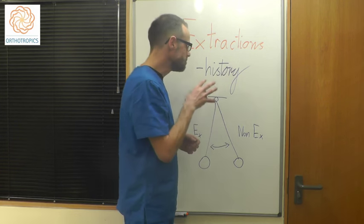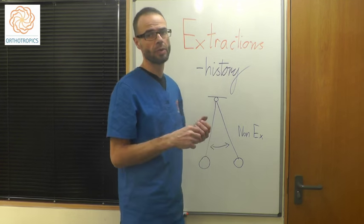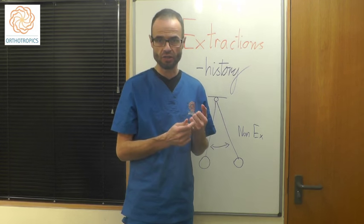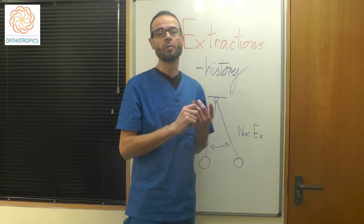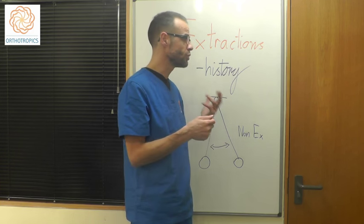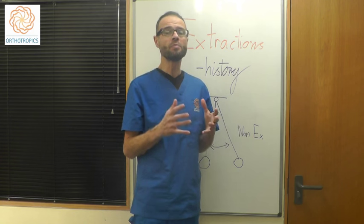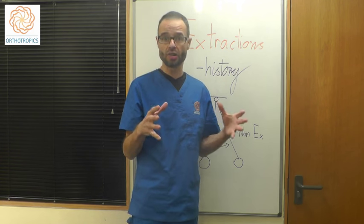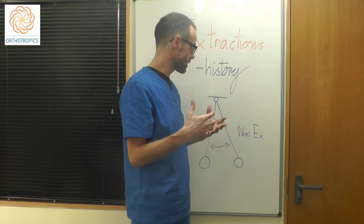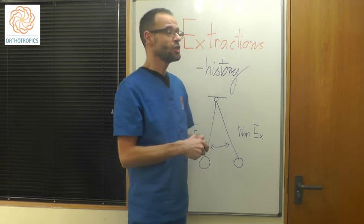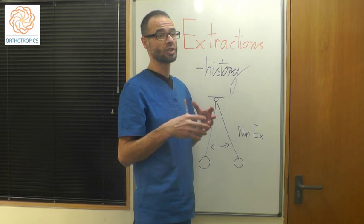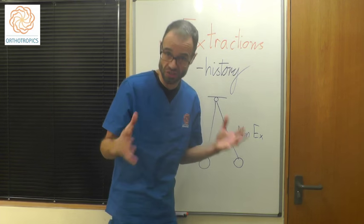Then, in the middle of the 1900s, you had people like Raymond Begg from Australia, who had looked at the Aboriginal teeth and noticed a lot of wear. And you saw people like Charles Tweed, who was a student of Edward Angle's. And these people decided that they were going to extract, and extraction became almost normal. In the middle of the 1900s, you were a fool or a charlatan if you didn't extract teeth.